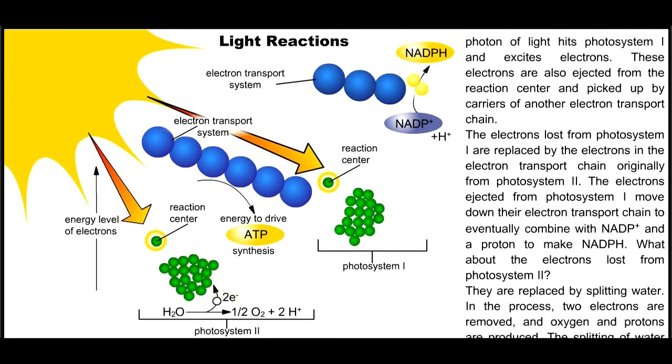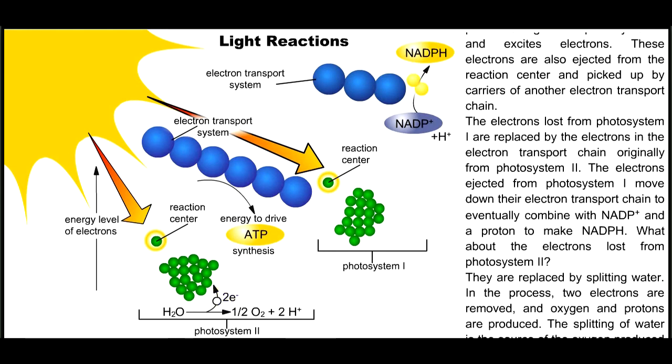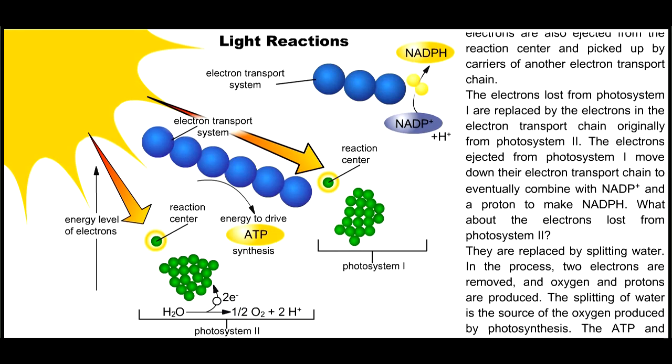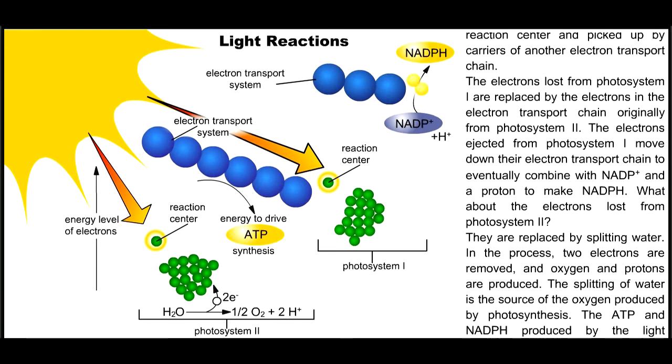In the process, two electrons are removed and oxygen and protons are produced. The splitting of water is the source of the oxygen produced by photosynthesis.